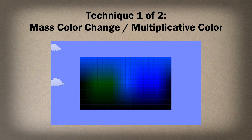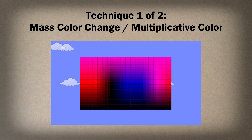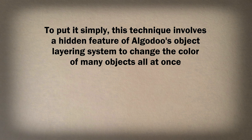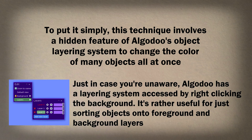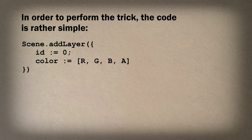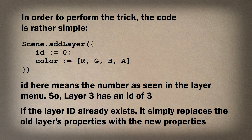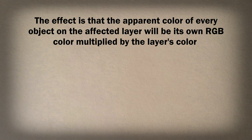First up: Mass Color Change, or Multiplicative Color. This technique involves a hidden feature of Algodoo's object layering system to change the color of many objects all at once. Just in case you're unaware, Algodoo has a layering system accessed by right-clicking the background — it's pretty useful. In order to perform the trick, the code is rather simple; just run this function. The ID here means the number as seen in the layer menu, so layer 3 has an ID of 3. If the layer ID already exists, it simply replaces the old layer's properties with the new properties.